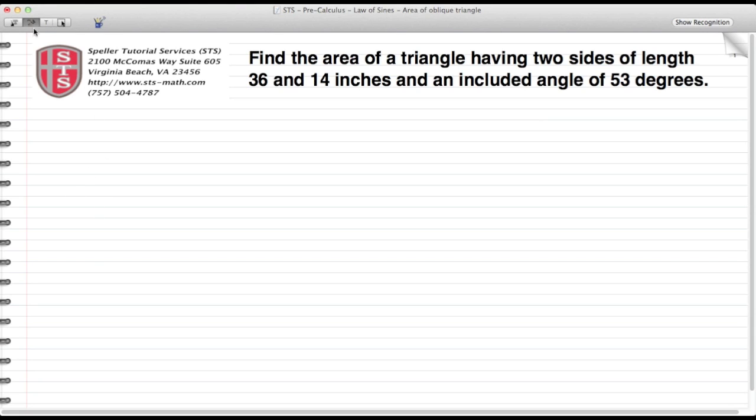Let's sketch out what they've just described. We'll draw an oblique triangle—a triangle without a right angle. We know that one side has a length of 36 inches, the other side has a length of 14 inches, and we're told that the included angle has a measure of 53 degrees.